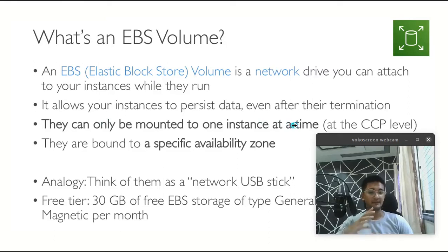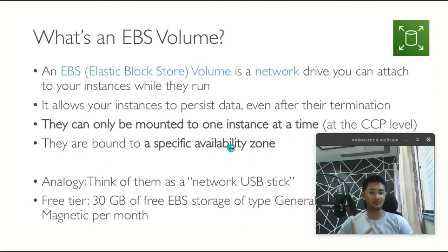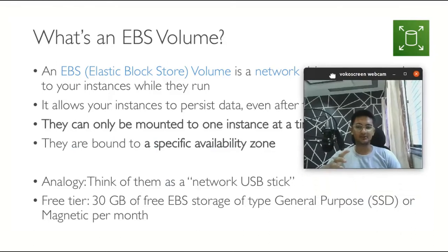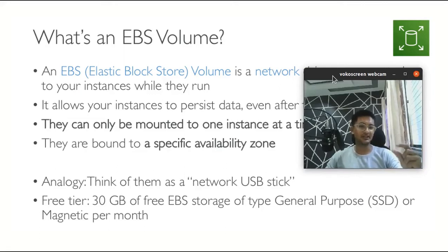You can have multiple volumes attached to an instance, but you cannot have a single EBS volume for multiple instances. They are bounded to a specific availability zone, which means you can only use your volume if your instance is in the same AZ as the volume. Think of them as a network USB stick — you store your data and can attach it to any other laptop, just like a pen drive.